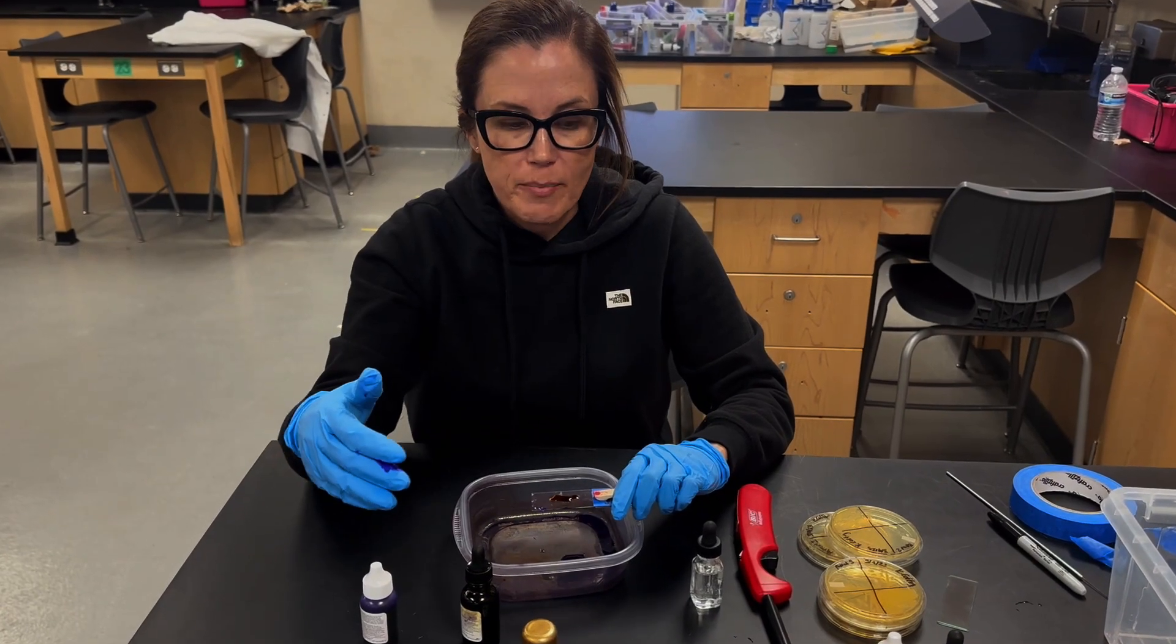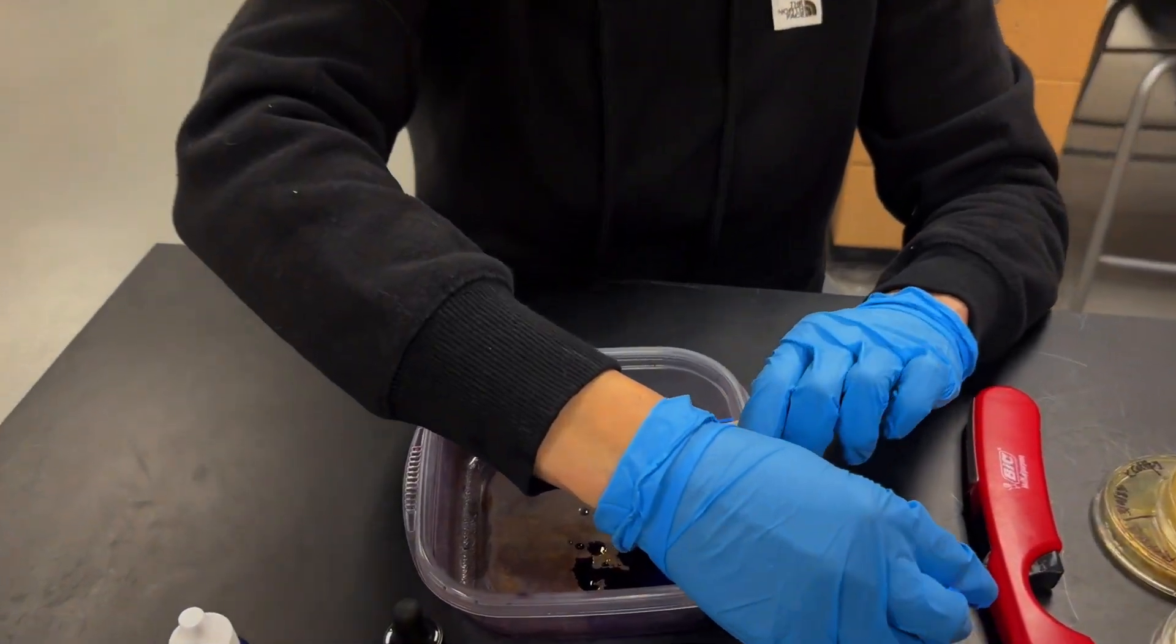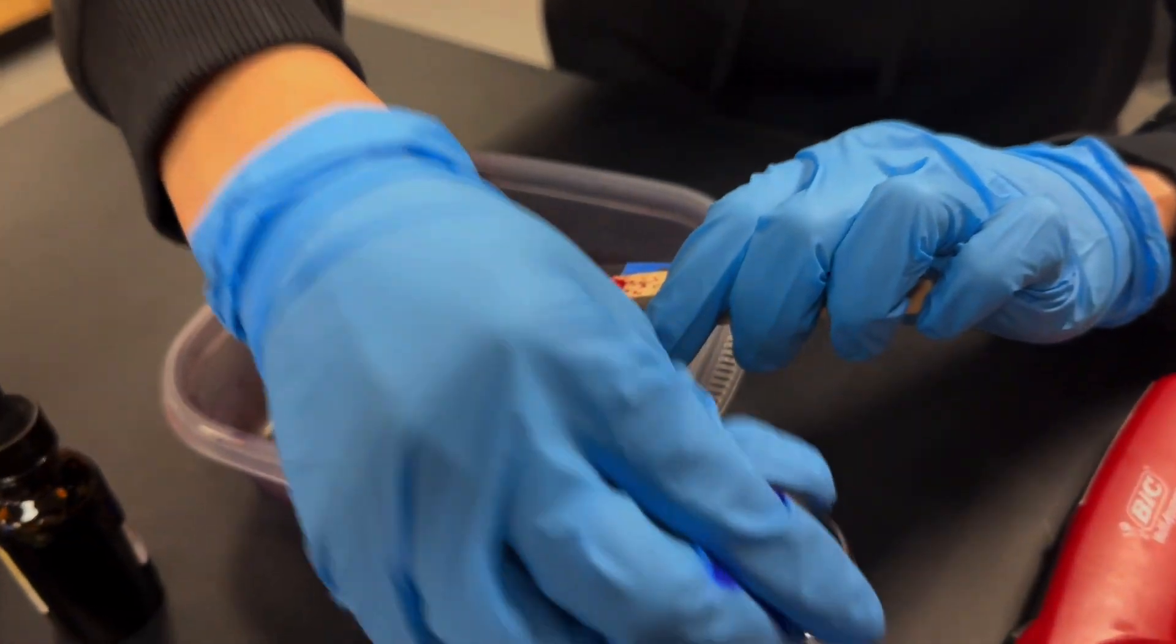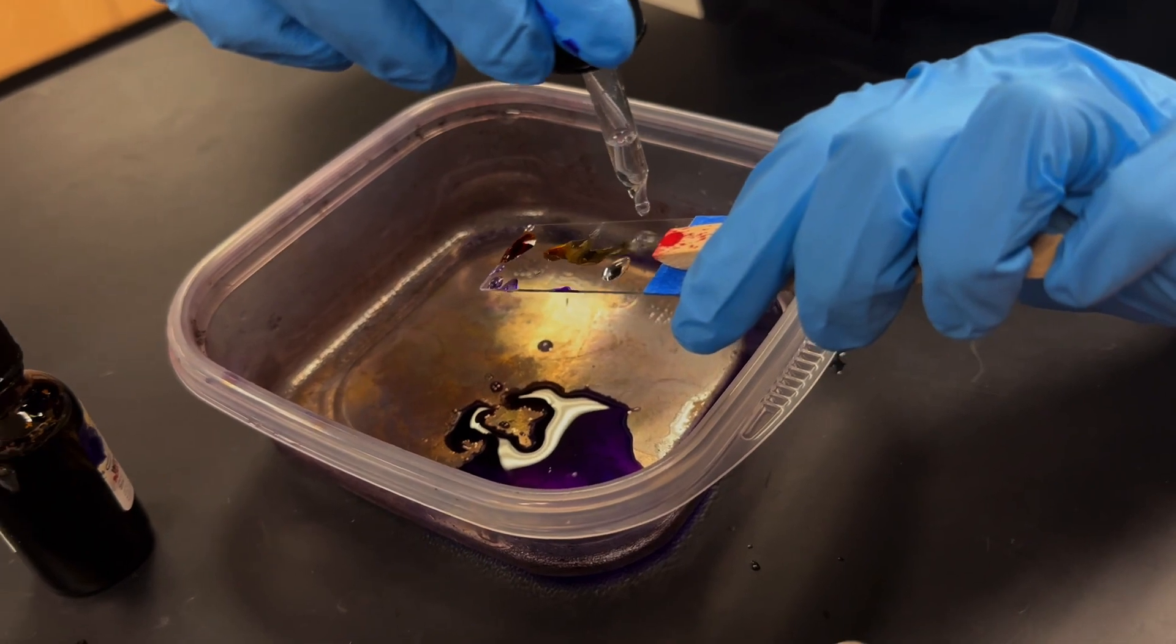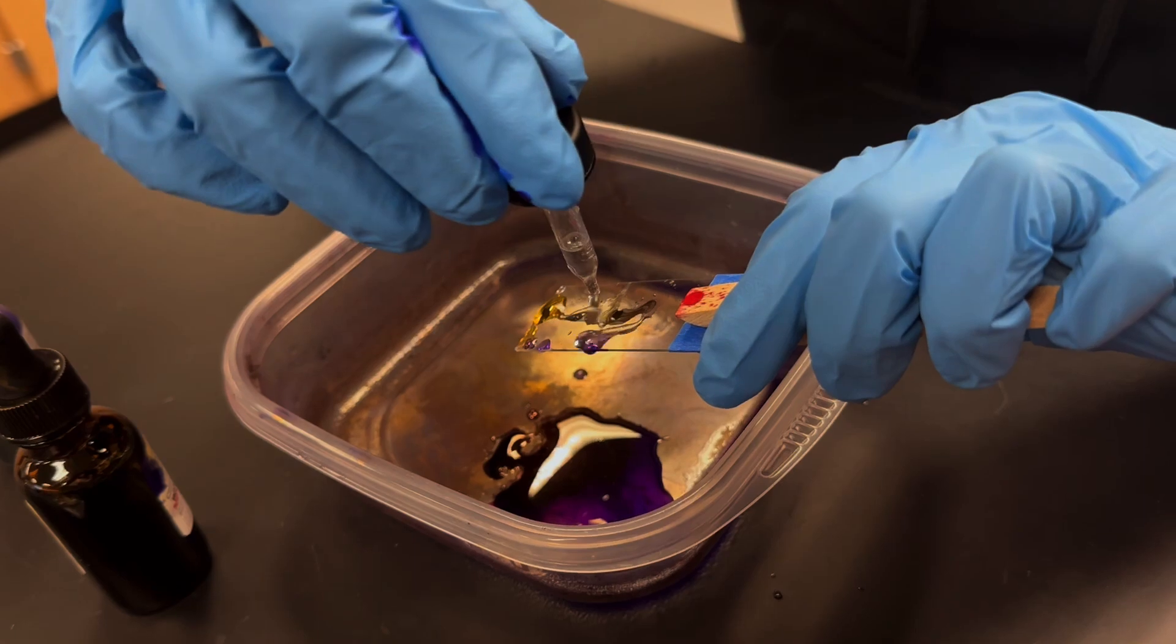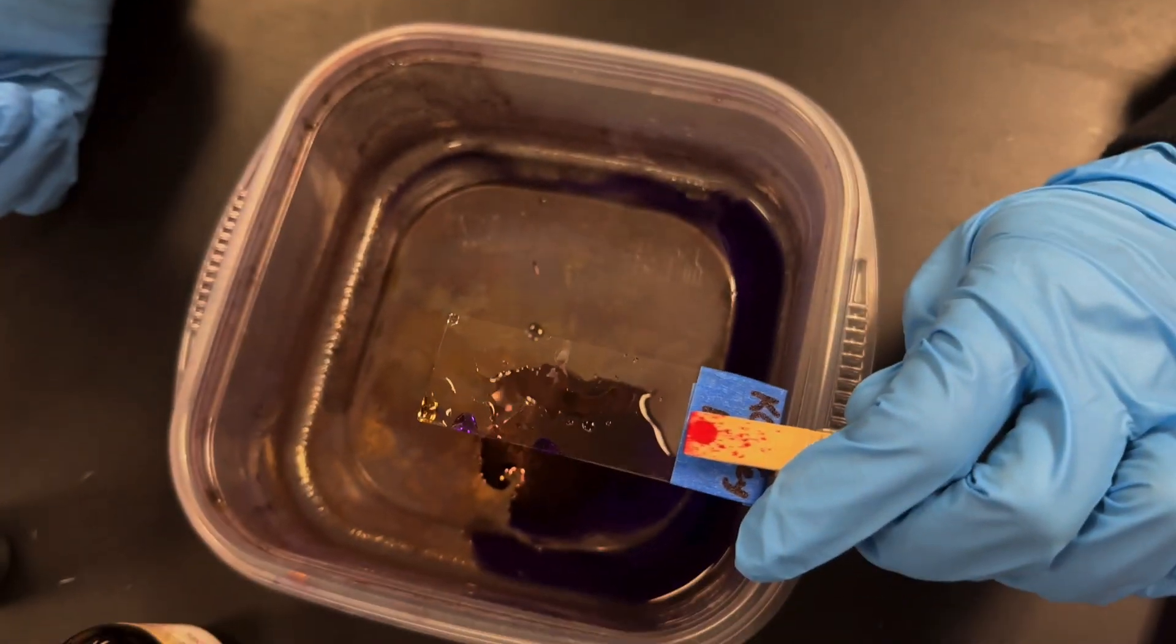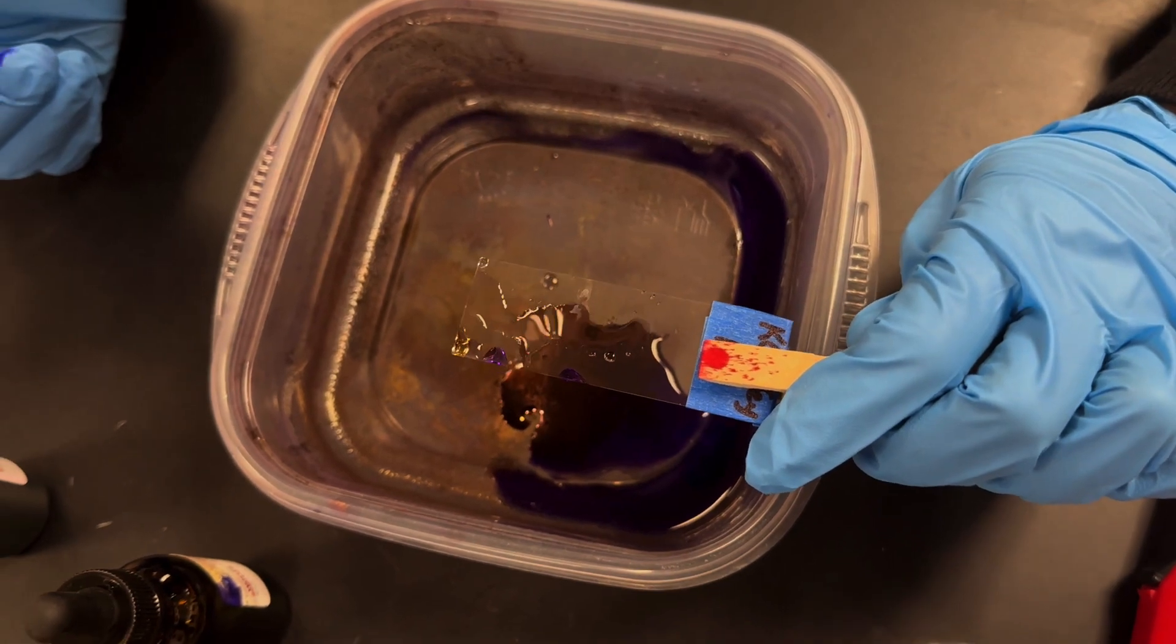Once one minute has passed, you will rinse the Gram's iodine off the same way that we did before. So hold it at an angle and then you'll just run it down until most of the color goes off of the slide. And then we're ready to move to the next step.